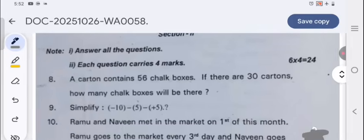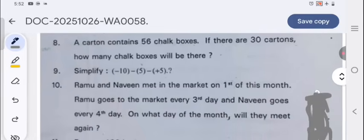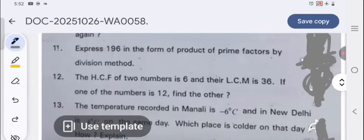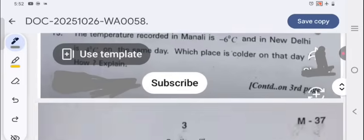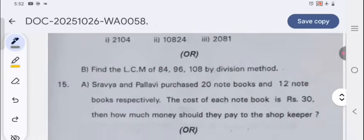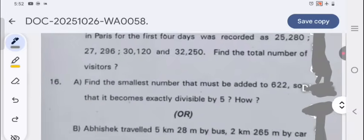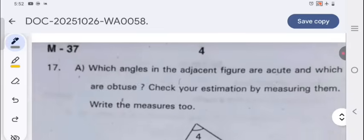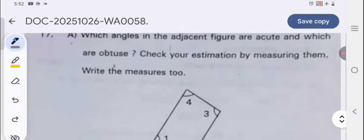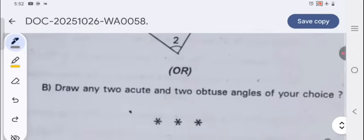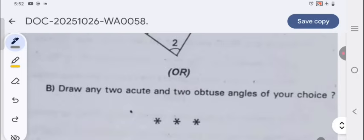This is the complete question paper of last year's SA for Telangana state. These are the questions given. The complete total number of questions given is 17. For eight marks questions, there is an internal choice A or B given. You can attempt either question A or question B. If needed, you can take the screenshot of this. Now I am moving towards the solution.